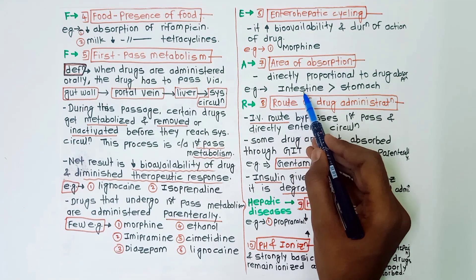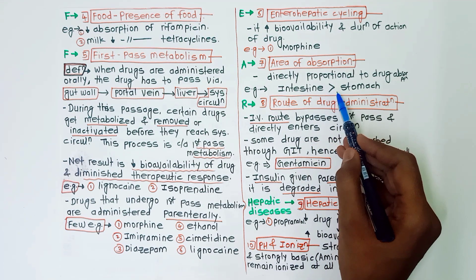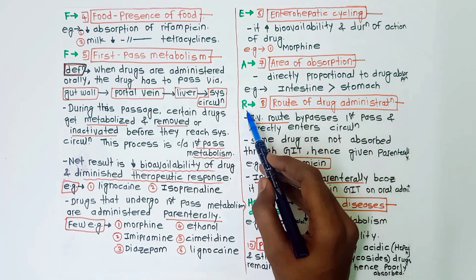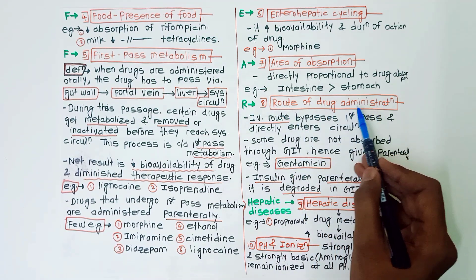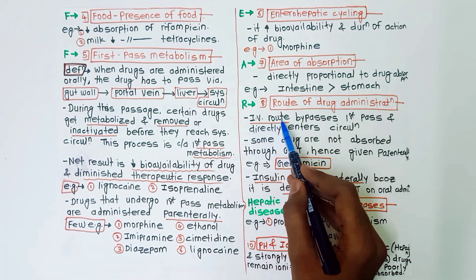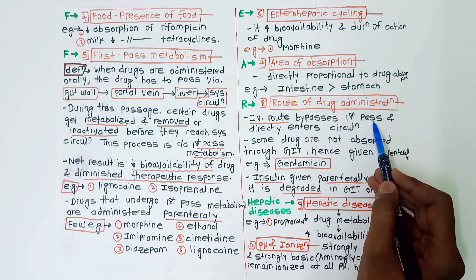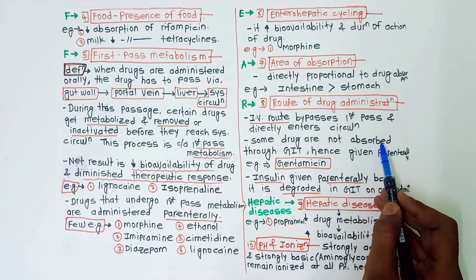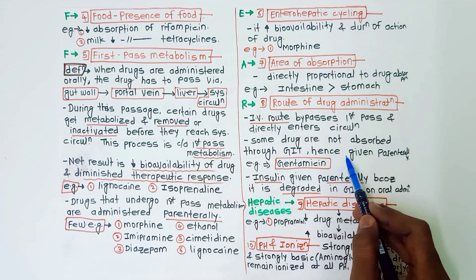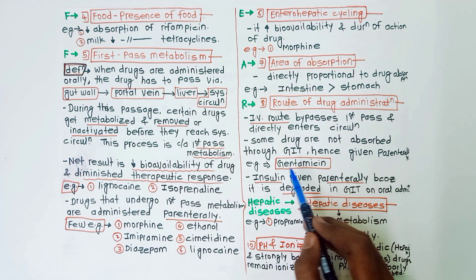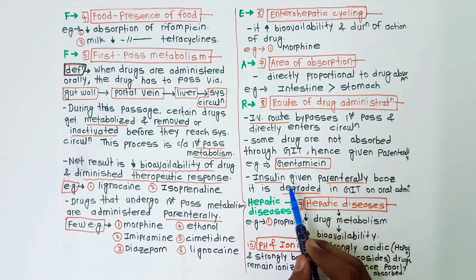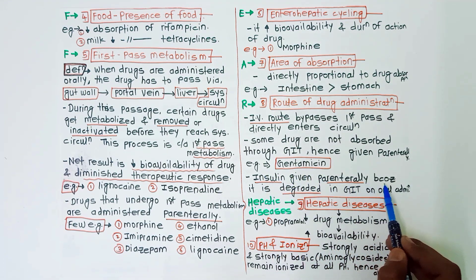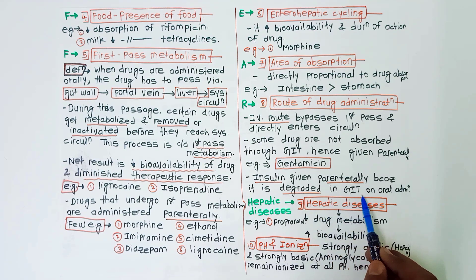Then R for route of drug administration. In this, intravenous route bypasses the first-pass metabolism and directly enters the circulation. Some drugs are not absorbed through the GIT, hence they are given parenterally, example is gentamicin. Insulin is given parenterally because it is degraded in the GIT on oral administration.